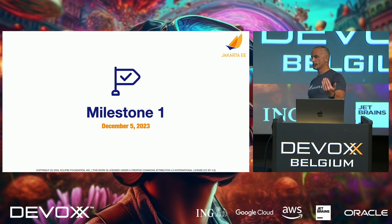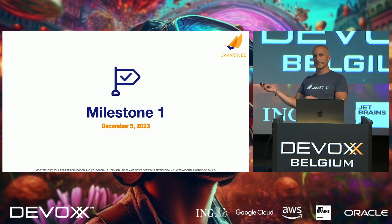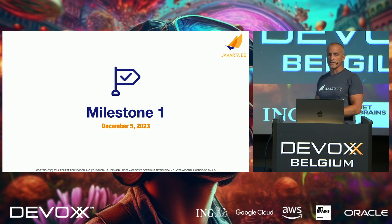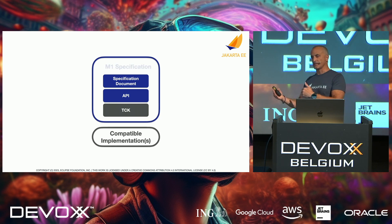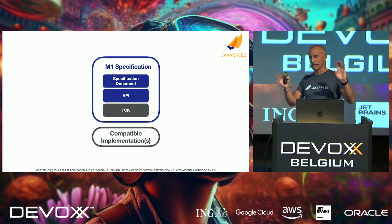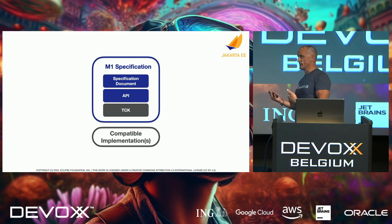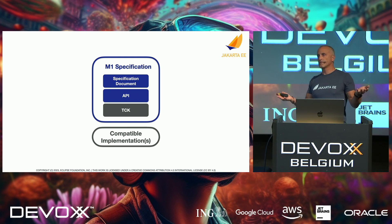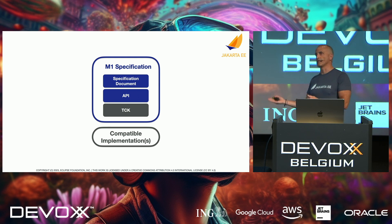We're also doing something new — we're going to release a milestone of EE 11 in December. December 5th is the date for our conference called Jakarta One live stream, where we'll have some noise around this milestone. The milestone release will produce a specification document and an API so we can bundle things together, compile it, and see that everything works — it's kind of a trial run of our build chain. The target audience isn't necessarily developers; it's primarily the vendors who are going to implement it. We don't expect a TCK or compatible implementation at this point.